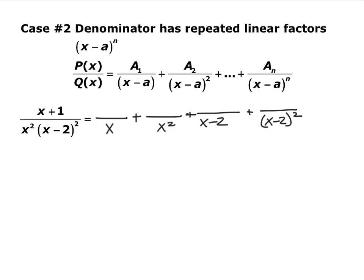Each of these, because they're linear — even if squared — gets one degree less in the numerator, so they just get a constant. I'll use a, b, c, and d with no x's in the numerators. Now again we need to make a common denominator: every numerator gets multiplied by what it needs to reach the common denominator.